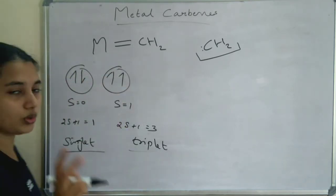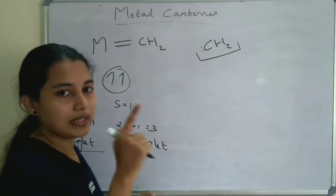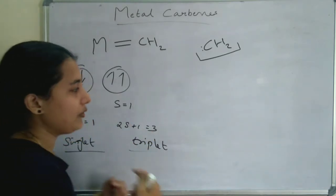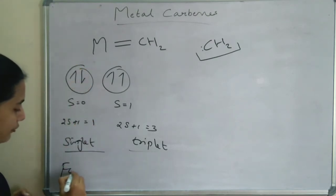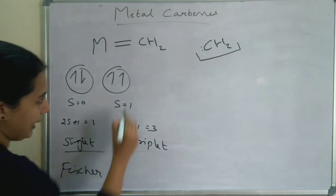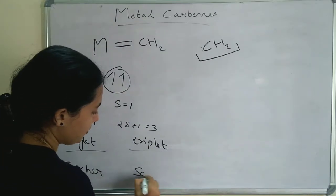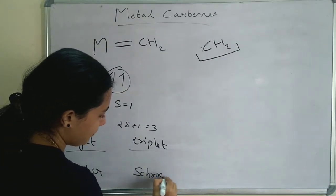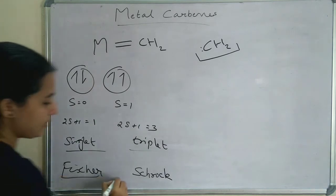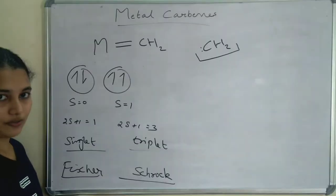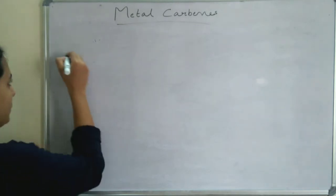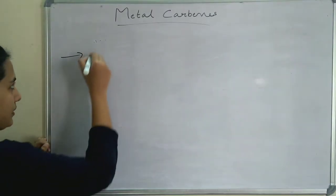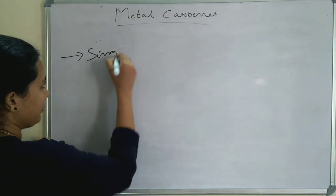So two types of carbene are there: singlet and triplet. We name these two as Fischer carbene and Schrock carbene. Let's move on to Fischer carbene first. In Fischer carbene, it is a singlet carbene with spin multiplicity of 1.